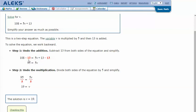The first step is to undo the subtraction. We're going to subtract 13 from both sides to try to get v by itself. 108 minus 13 is 95, and 13 minus 13—positive 13 and negative 13—cancel each other out, so we're just left with 5v. We're one step closer to getting v by itself.